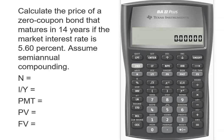Hey everybody, it's Professor Williams, and today we're going to calculate the price of a zero-coupon bond. So what we have is a zero-coupon bond that matures in 14 years from now, and we have an interest rate of 5.6%, but we have semi-annual compounding.